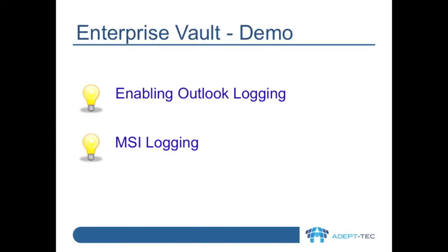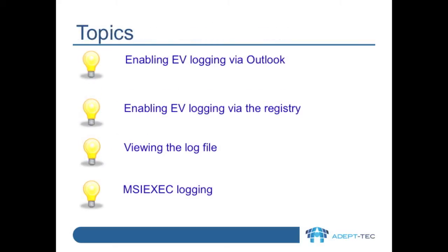In this video we will run through enabling Enterprise Vault Outlook add-in logging. I'll show you two different ways to enable it, which will mean that you can get logging for most situations. I'll show you a number of different ways to access the log file. You might want to enable logging to troubleshoot a client-related issue, such as problem searching for items. Remember that the logging does have a small performance impact, so remember to turn it off afterwards. At the end of the video I'll show you MSI exec logging, which can be used for troubleshooting installation issues.